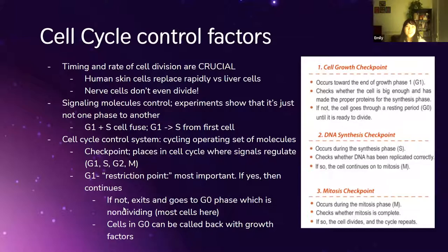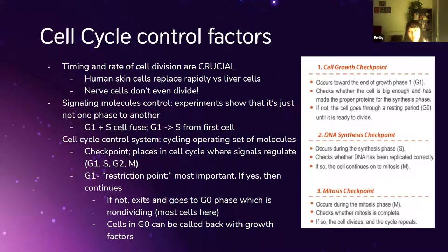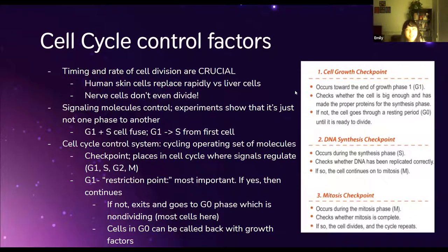We can't just have cells dividing everywhere — that would end badly. The timing and rate of cell division are absolutely crucial. This changes depending on cell type: human skin cells replace themselves really quickly, liver cells don't divide as quickly, and some cells like nerve cells don't even divide because the cell cycle doesn't allow them to.